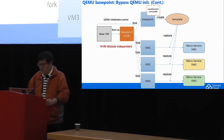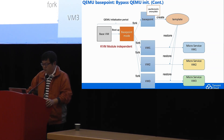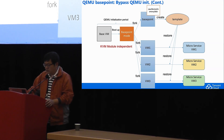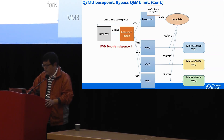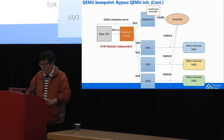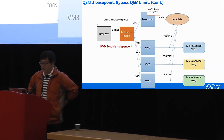As you can see, the following VMs — VM one, two, three — are forked from VM zero as well as the base point VM. Since they are able to restore from the base point, they skip the kernel boot-up time to get an extremely faster boot-up for microservice usage.